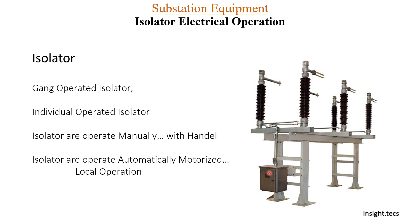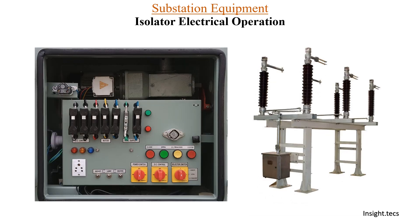Local operation is carried out electrically from the switch yard from the box itself. Remote operation can be done from the control room — there is no need to go to the box in the switch yard. From the control room itself, remote operation of the isolator can be carried out. This is the main control box of the isolator, and over here you can see the control panel.